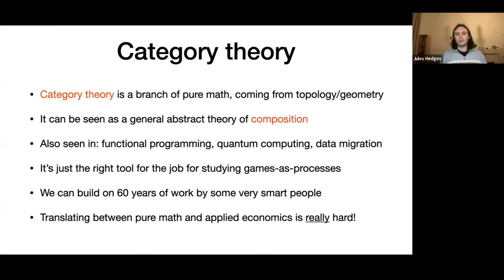I haven't yet said the words category theory. In the background here is a branch of pure mathematics, category theory, which comes from topology and is something like a general mathematical theory of composition. If you've heard of it, there's a good chance it was through functional programming. It turns out this mathematical machinery is just the right tool for the job. My role is as a kind of bridge between the pure mathematicians and the applied economists.